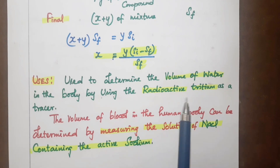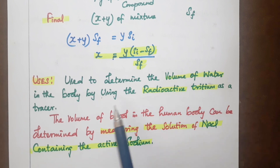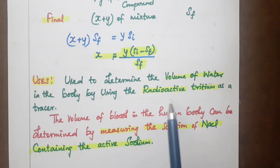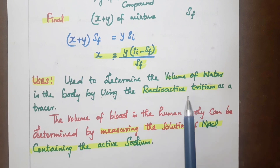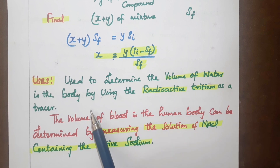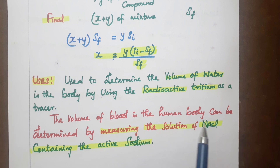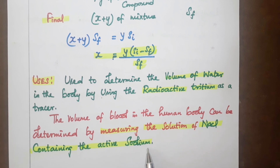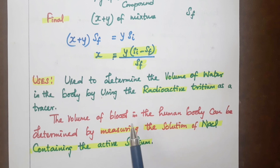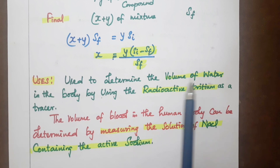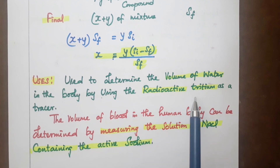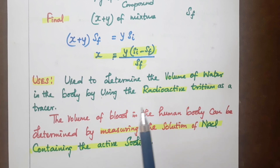This method is used to determine the volume of water in the body by using radioactive tritium as a tracer. The volume of blood in the human body can also be determined by measuring the dilution of radioactive sodium chloride containing active sodium. Using the Isotope Dilution Analysis formula with an isotope tracer, we measure the final specific activity Sf.